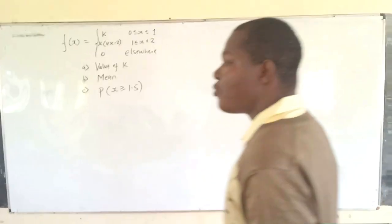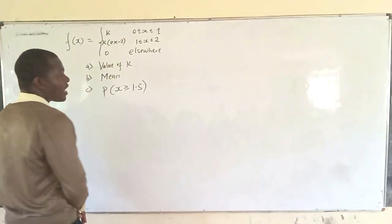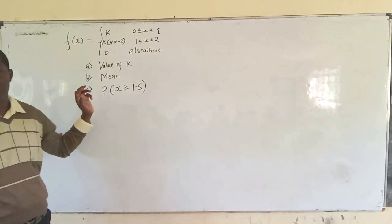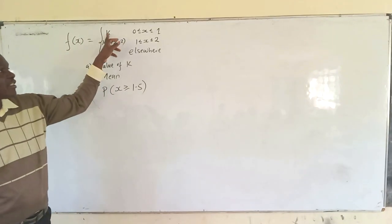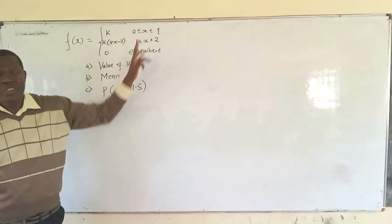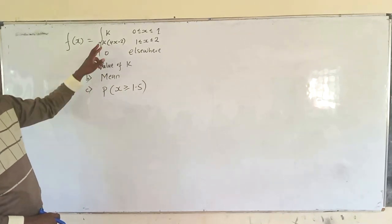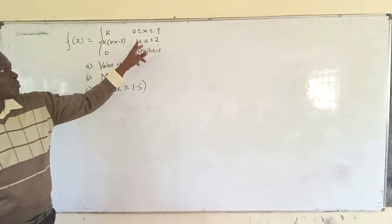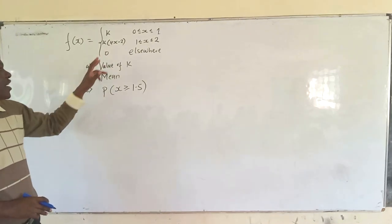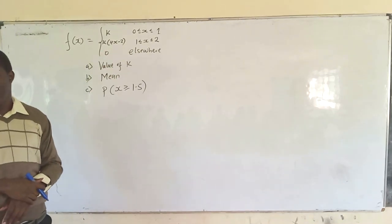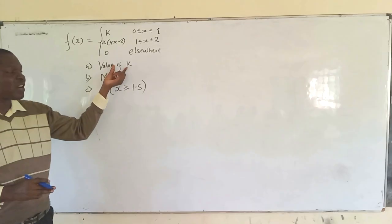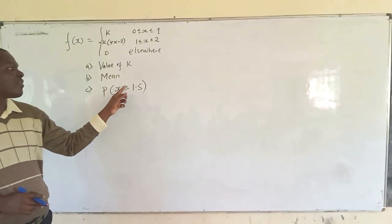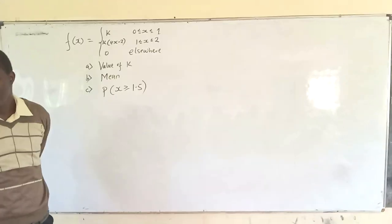A continuous random variable is defined by the probability density function f(x) = k when x is from 0 to 1, and f(x) = k(4x minus 2) when x is from 1 to 2, and 0 elsewhere. You've been told to determine the value of k, the mean, and the probability that x is greater than or equal to 1.5.